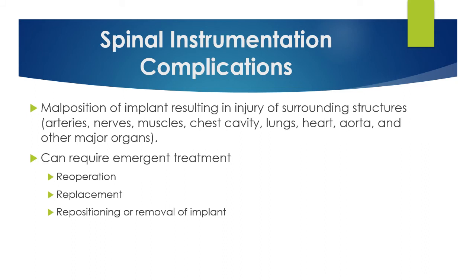Malposition of the implant can result in injury to surrounding structures such as arteries, nerves, muscles, the chest cavity, lungs, heart, aorta, and other major organs. Complications of spinal instrumentation can require emergent treatment, including re-operation, replacement, repositioning, or removal of the entire implant itself.